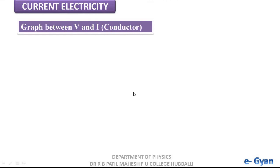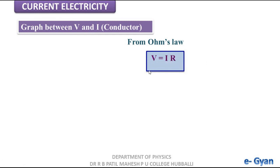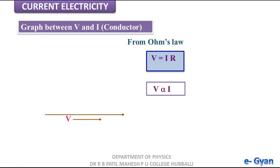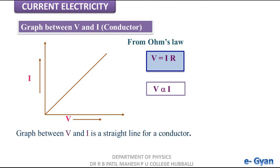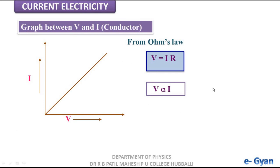Now let us see the graphical relation between potential difference and current. From Ohm's law, V equals I into R, which implies V is proportional to I for a given conductor where R is constant. Plotting a V versus I graph with voltage along the x-axis and current along the y-axis, as voltage increases current also increases. The graph between V and I is a straight line for a conductor obeying Ohm's law.